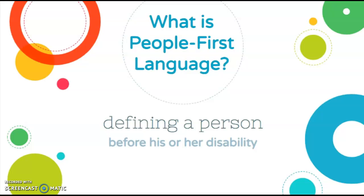What is People First Language? It's when you define a person before his or her disability. It's describing what a person has, not what a person is. It eliminates hurtful comments and prejudice. It's not about being politically correct — it's about respect and thoughtfulness.